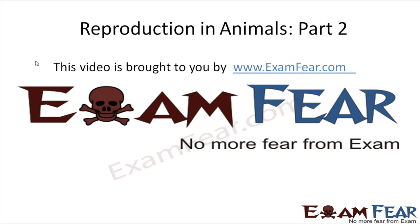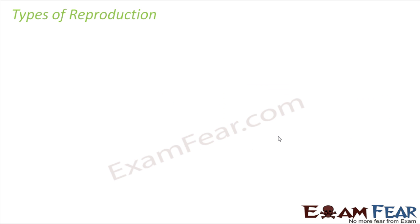Hello friends, this video on reproduction in animals part 2 is brought to you by examfear.com. No more fear from exam. Now let us talk about the types of reproduction — what are the various ways by which organisms can reproduce? Reproduction is mainly of two types: asexual reproduction and sexual reproduction.